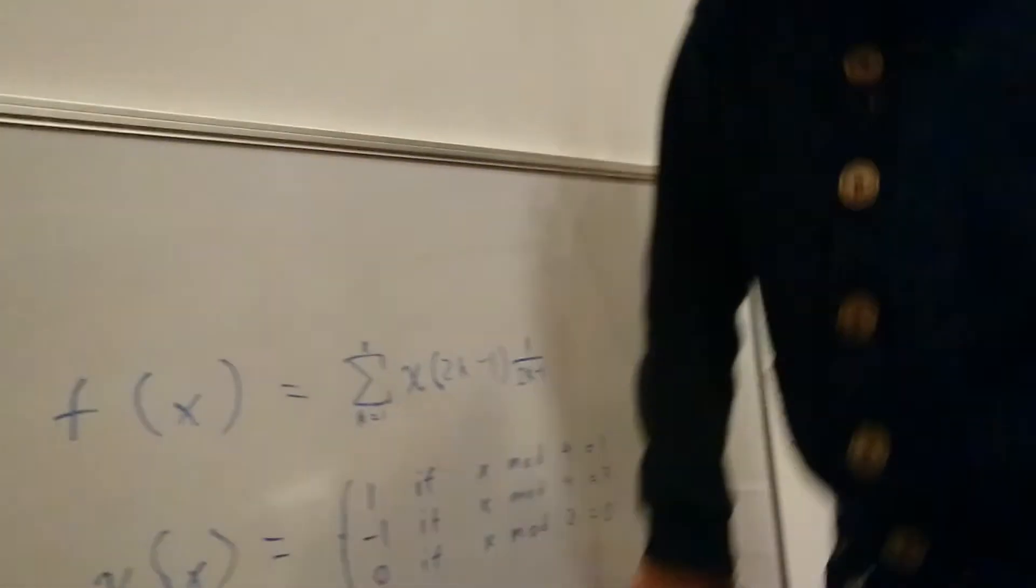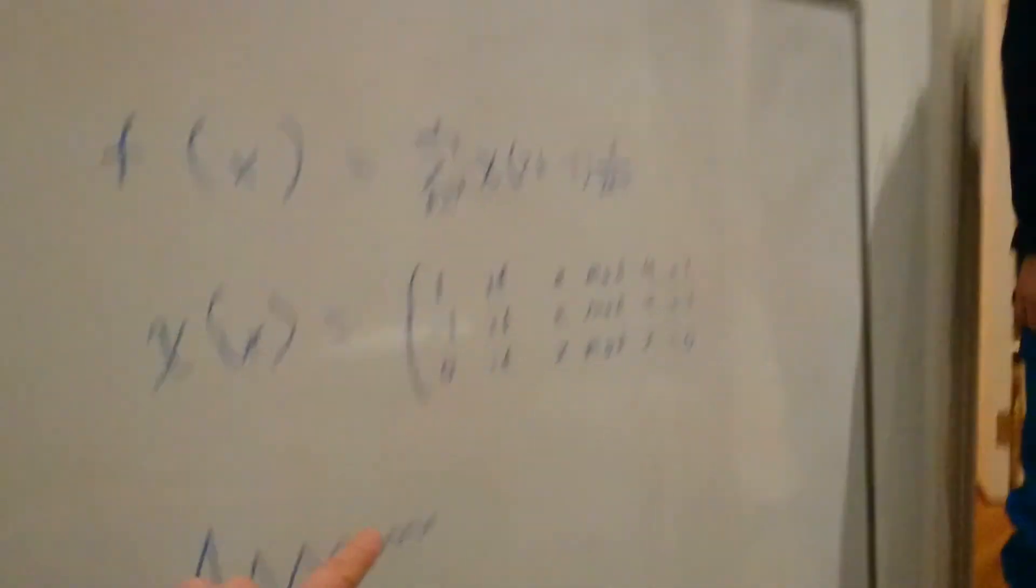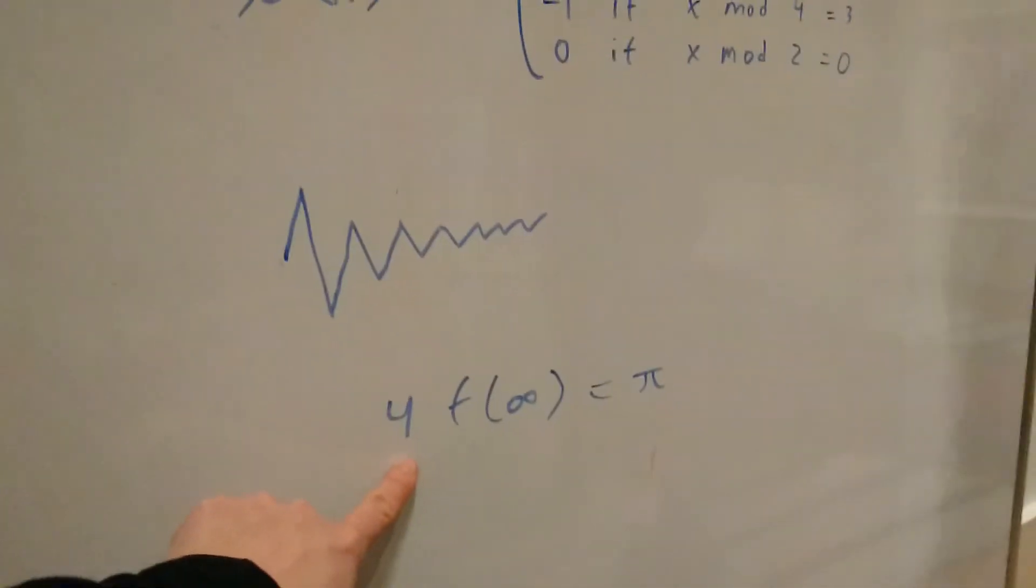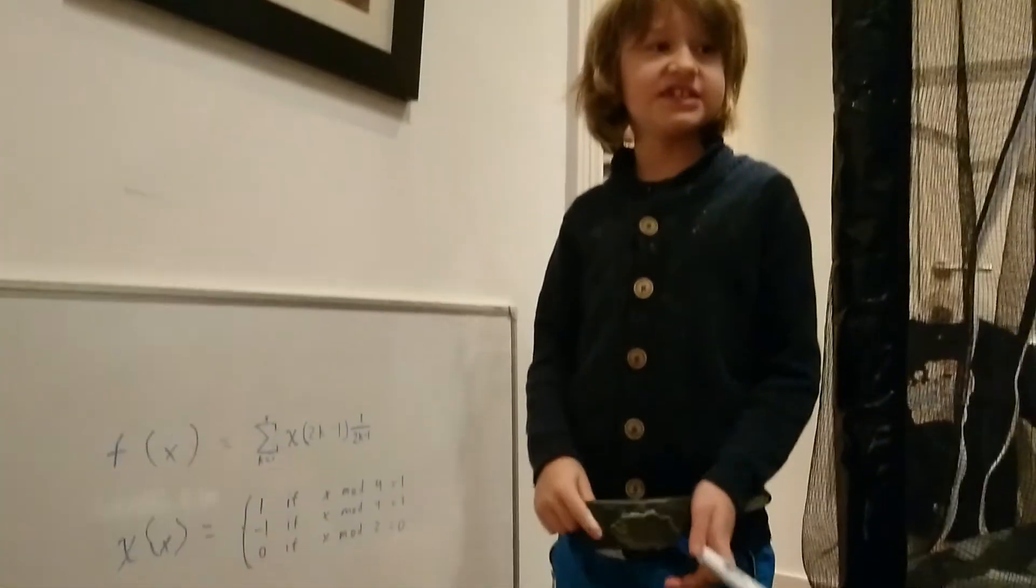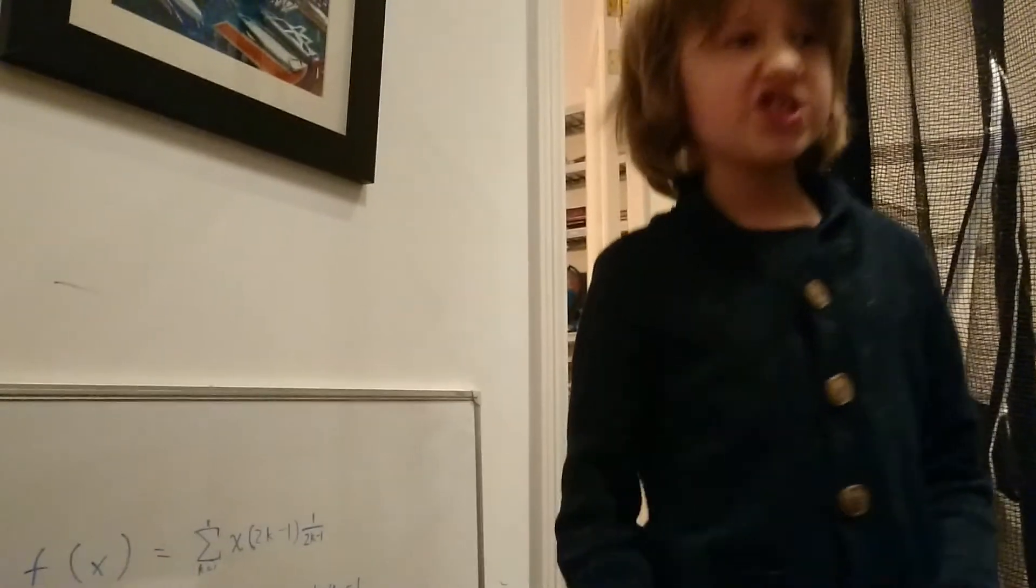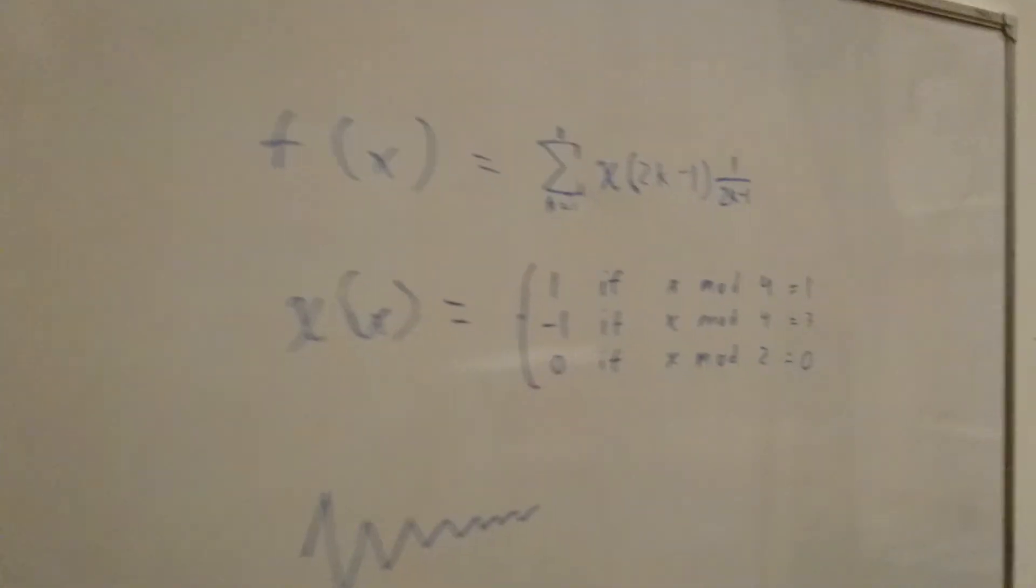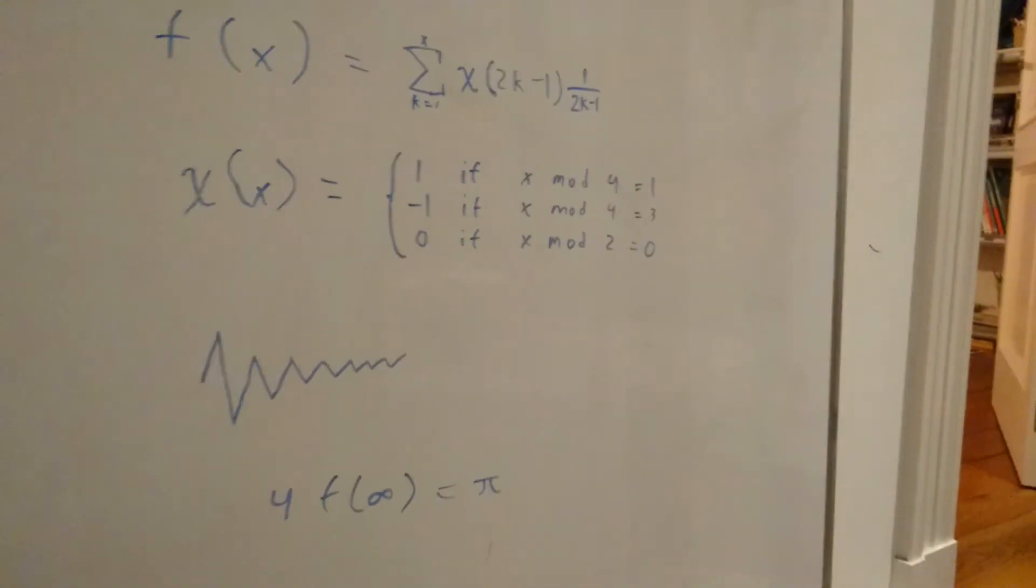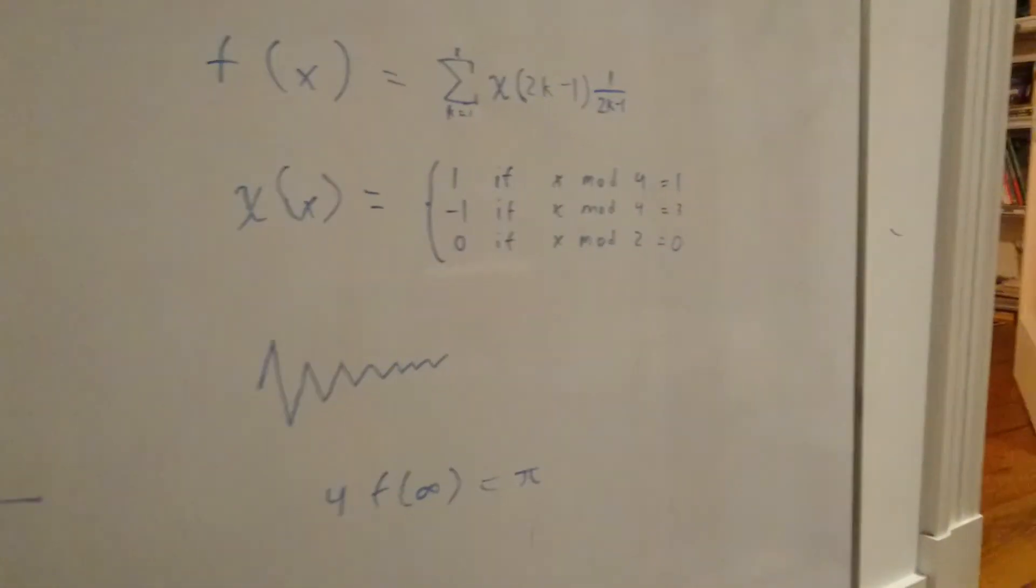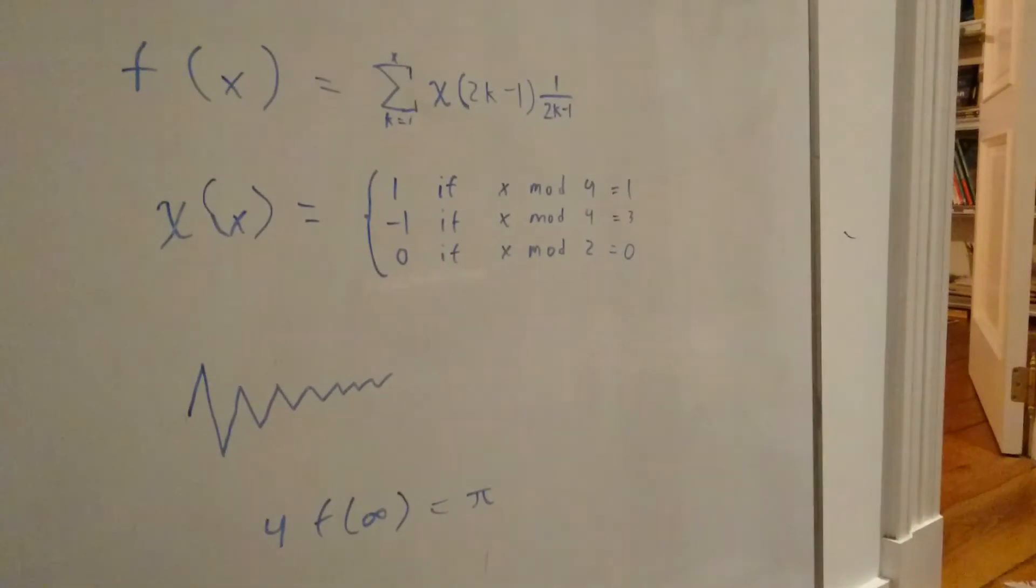But you didn't see this anywhere. You saw this one somewhere, right? On the Numberphile video. Only instead of f of infinity, it says four times an infinite sum, that's pi.